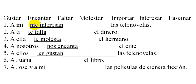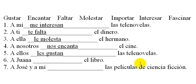You get the idea by now. Make sure that you put this pronoun to refer to the person that we're talking about — who it is that likes, or who has something important to them, or who is fascinated by something. And then the verb agrees in number with the noun that follows it. That's the most common problem I see with these verbs. So that is it for today. If you have questions or doubts, let me know and I'll get back to you. Thanks for watching.